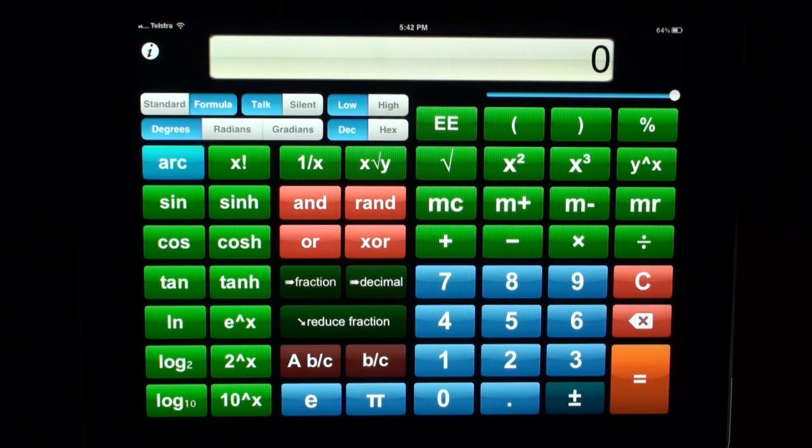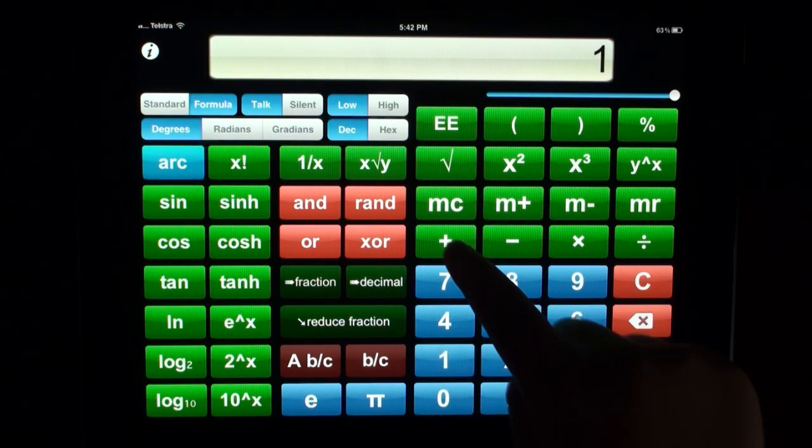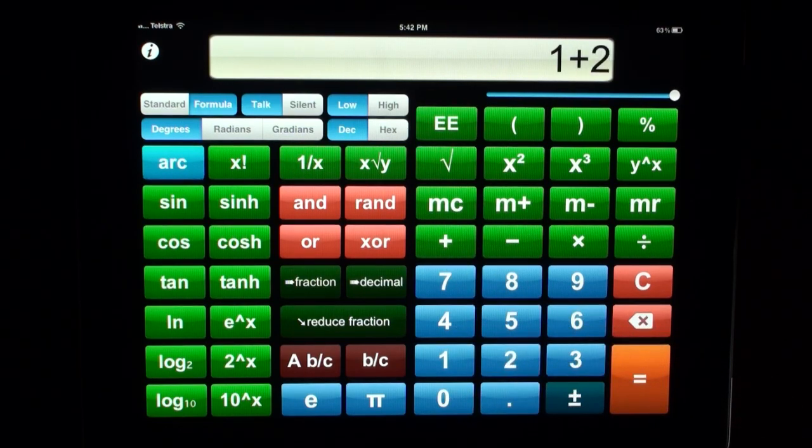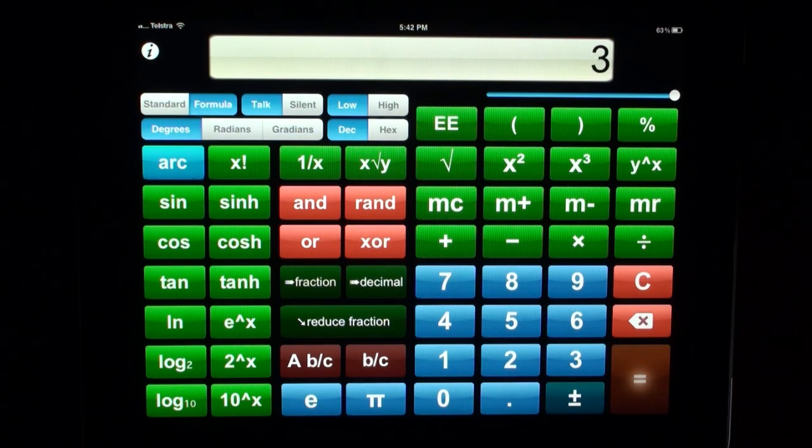Now let's try performing a sum with our newly recorded custom voice. 1. Plus. 2. Because I am in formula mode I can click on the numeric display to see what I have written. 1. Plus. 2. And if I press equals. Equals. 3.